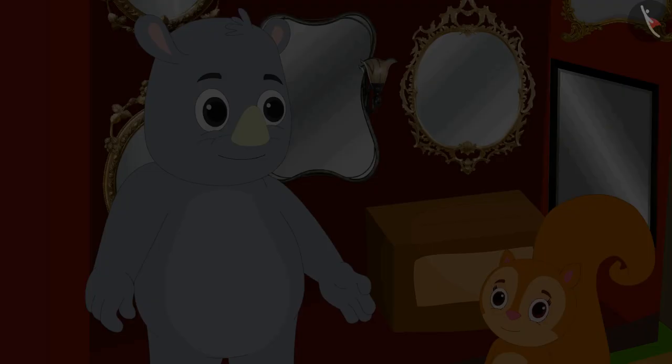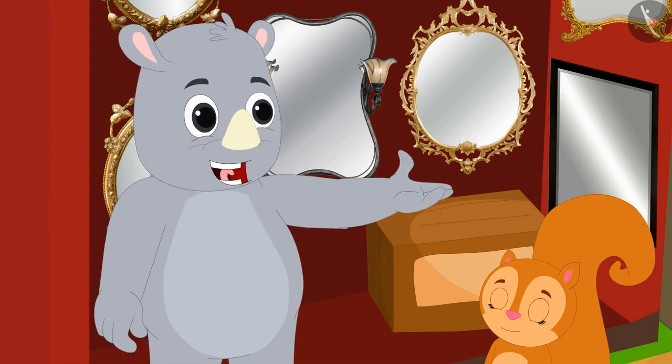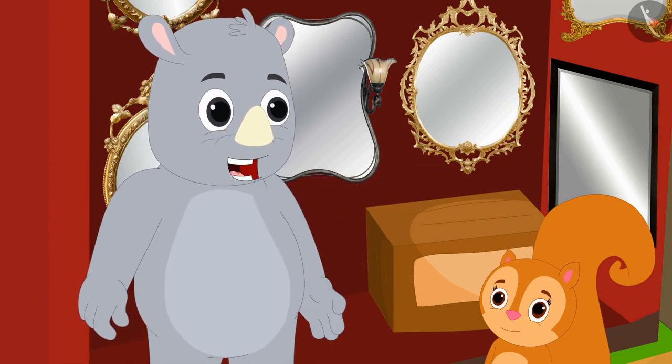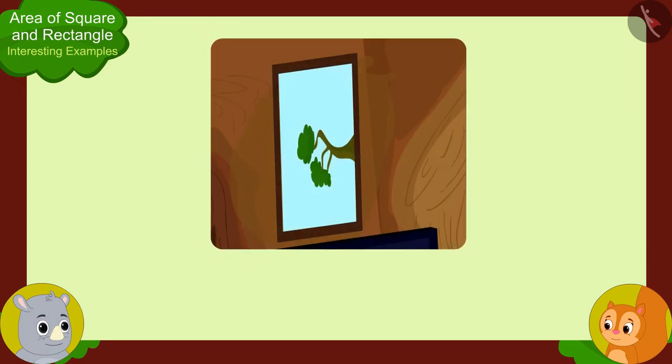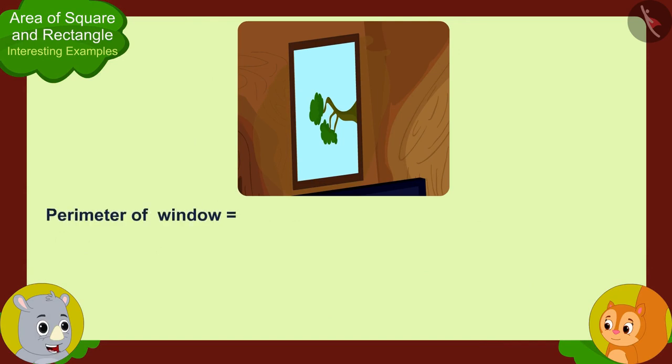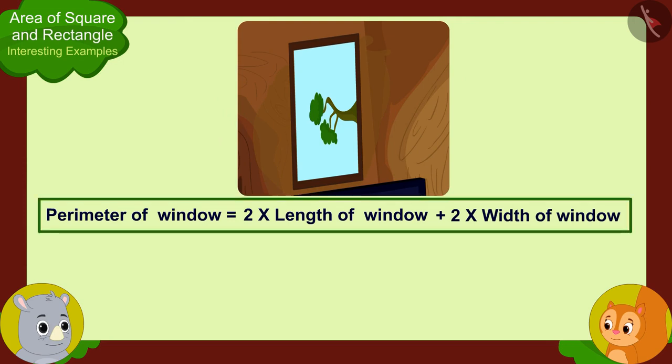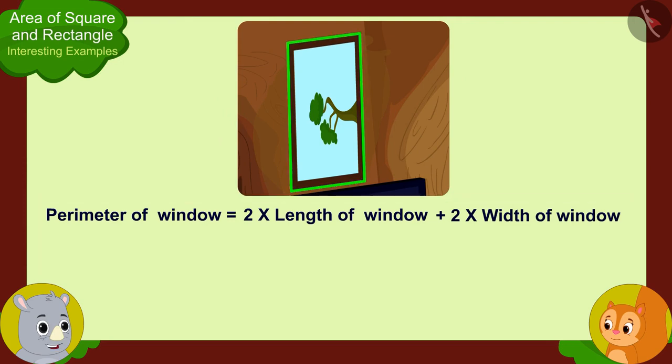Oh, such a small thing! I can help you. Look Chanda, your window is rectangle shaped. That means we can write the perimeter of your window as two times the length of the window plus two times the width of the window. Can you now tell me what is the perimeter of your window?